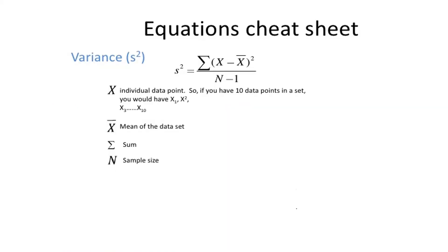This is an equation cheat sheet — it tells you what each part of the equation means. X is each individual data point. X with a bar on top is the mean of the data set. The sigma symbol means sum of, and N is the sample size.